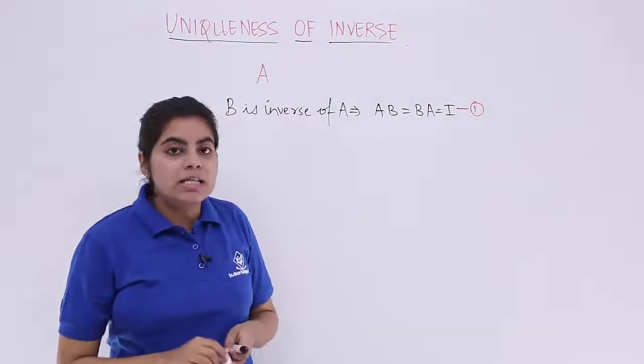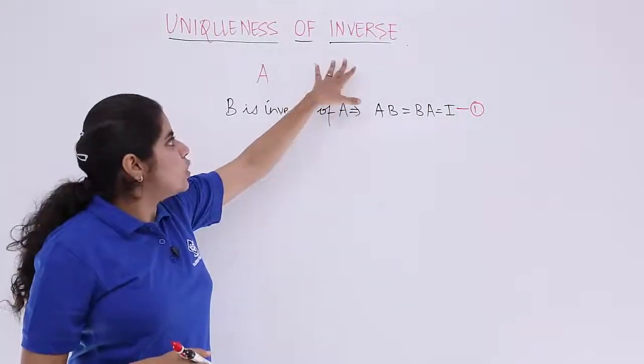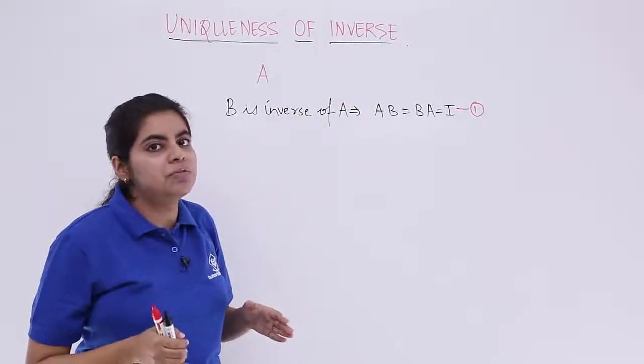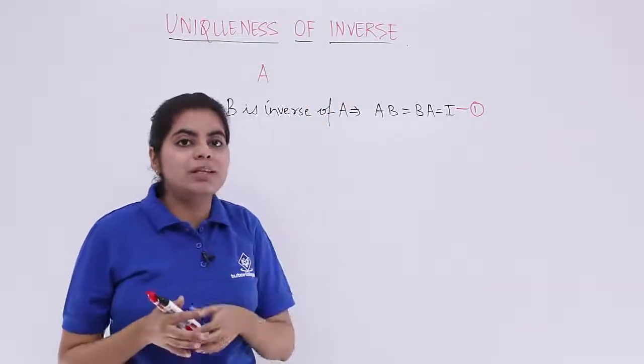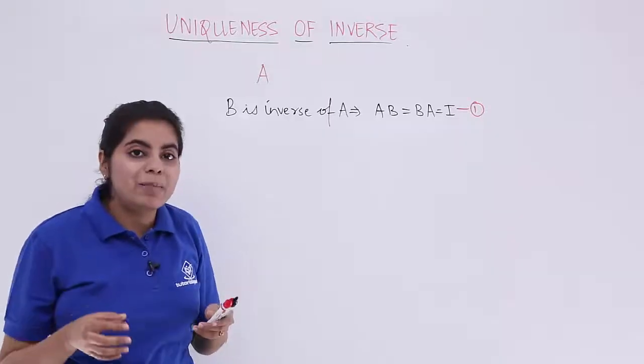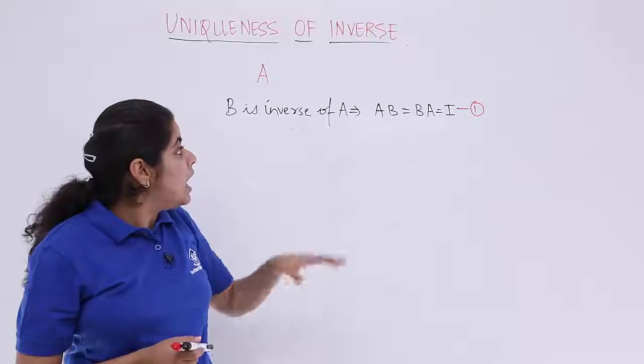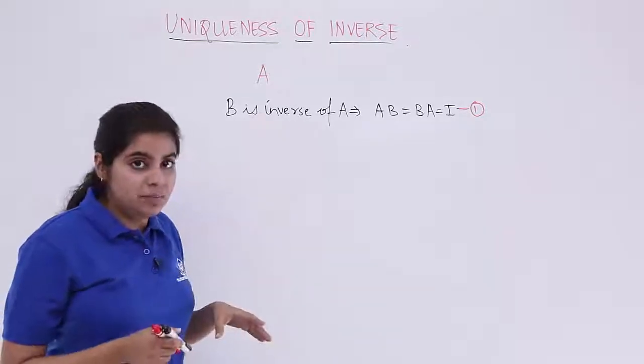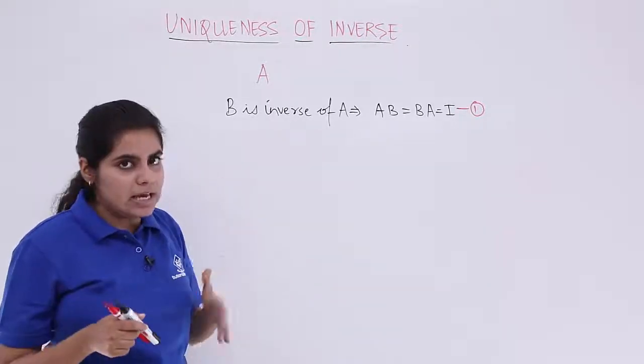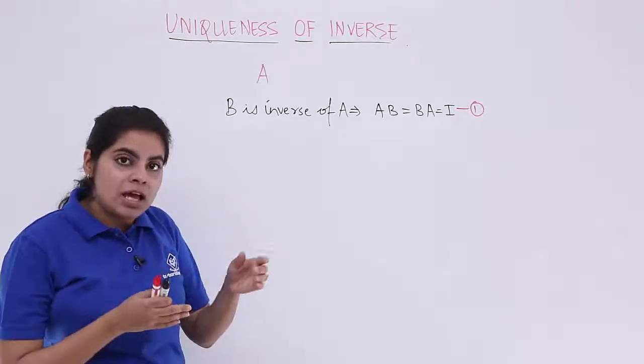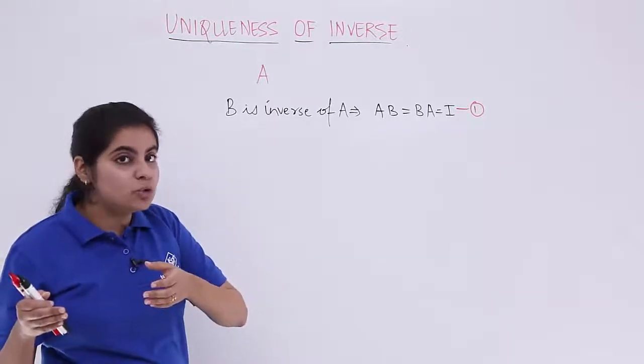Now since the topic says uniqueness of inverse, I need to prove that the inverse is unique. So I'll be proving this by contradiction. By proving by contradiction I mean I'll be taking another matrix C and I'll be telling that yes, C is also the inverse of A.